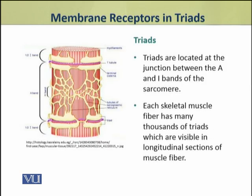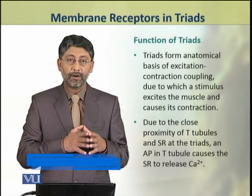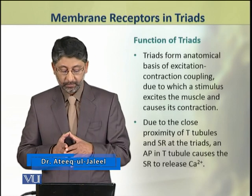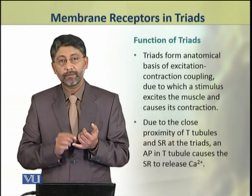These triads are located at the junction between A and I bands of sarcomere. These triads form the anatomical basis of excitation-contraction coupling, due to which a stimulus excites the muscle and causes its contraction.